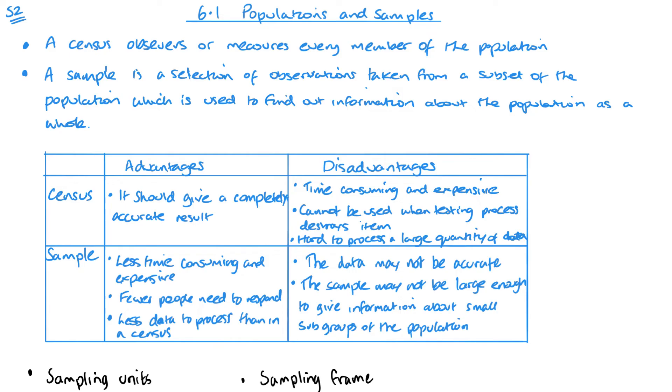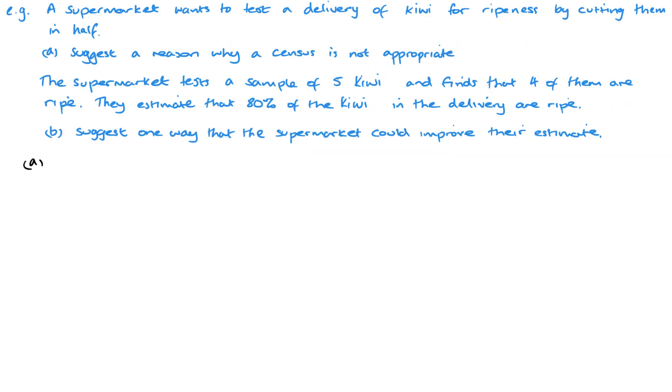We'll do a little example and a few questions just to get your head around it. A lot of this stuff kind of comes up within questions rather than questions on it on its own. So here we have a supermarket and it wants to test the delivery of kiwi for ripeness, and it's going to do this by cutting them in half. The reason why a census is not appropriate: well, if you test them by cutting them in half, a census means every single item, so you cut every single kiwi in half, which means you have none left to sell.